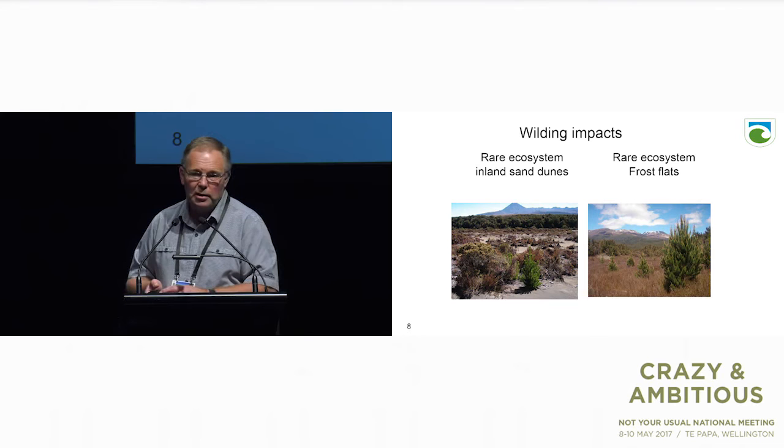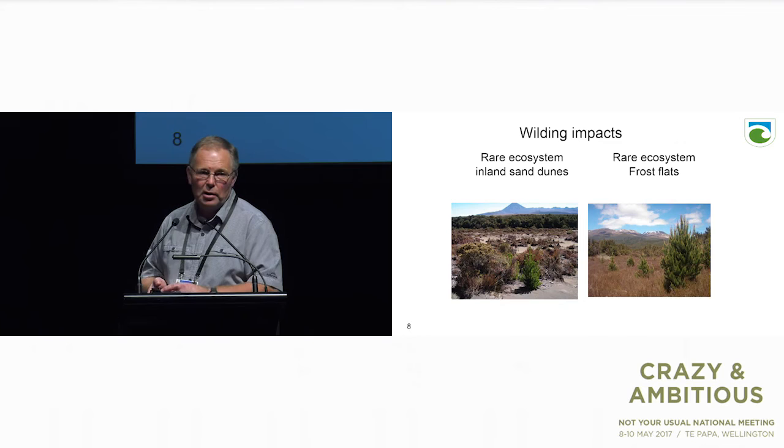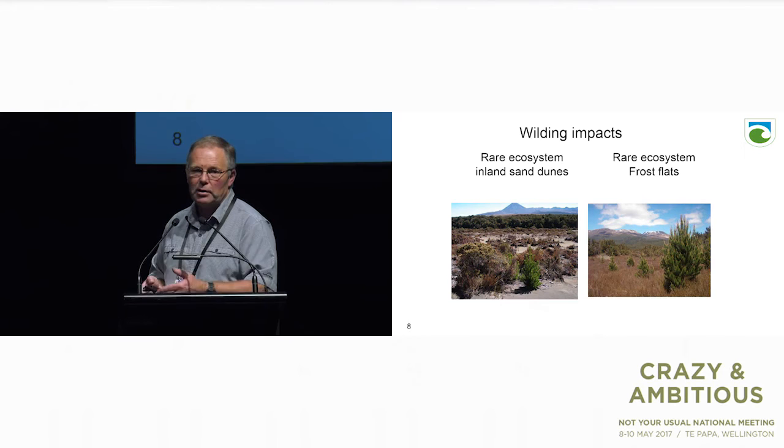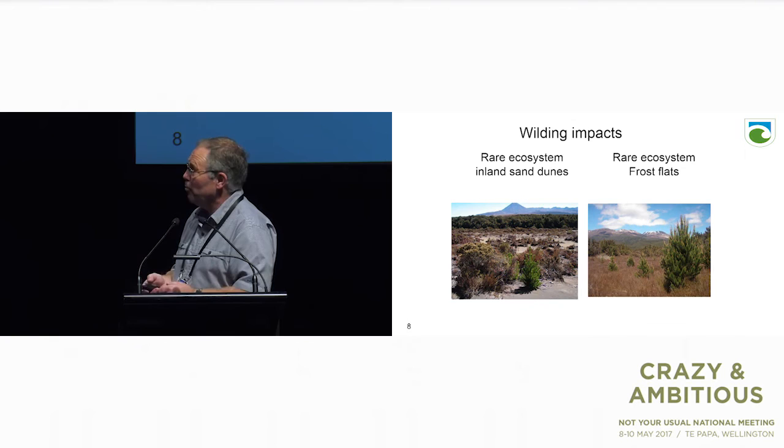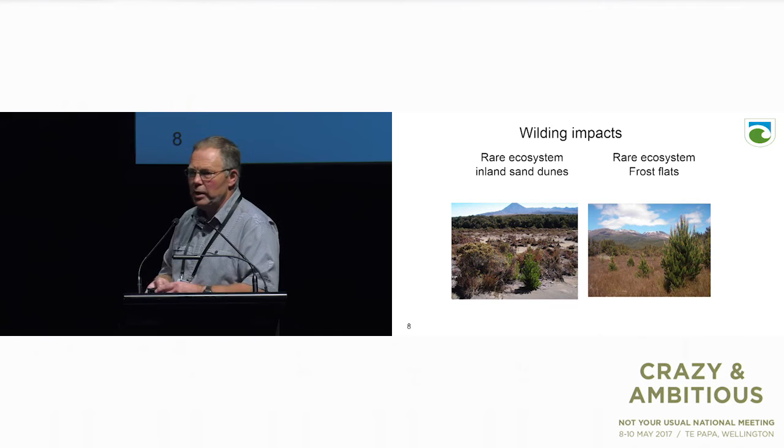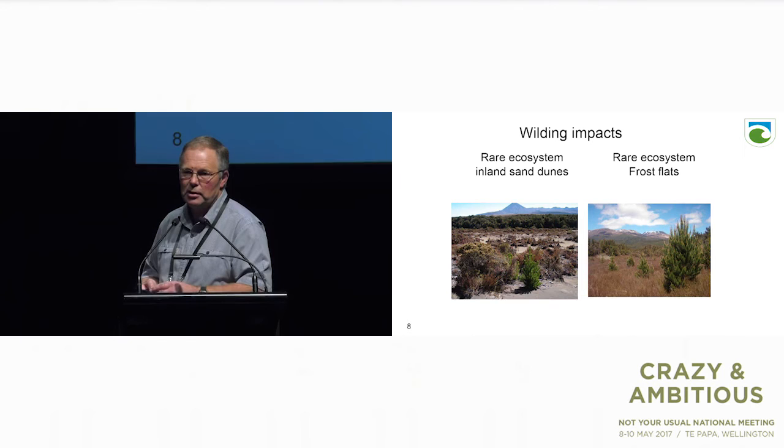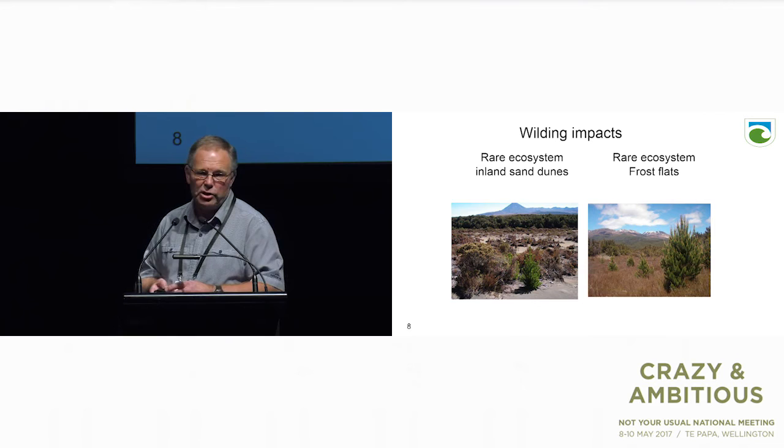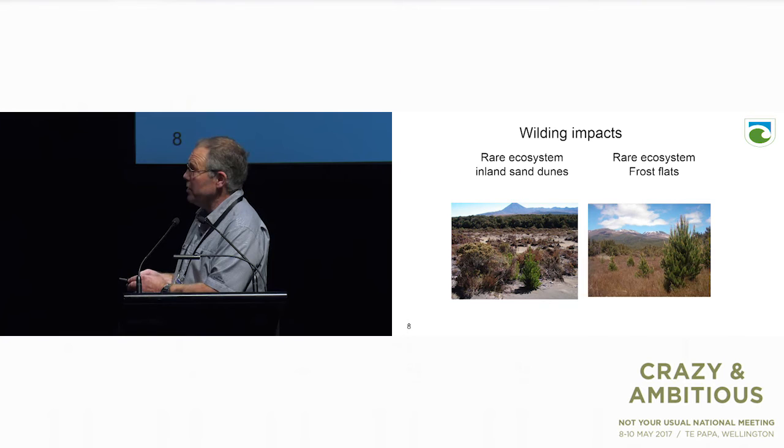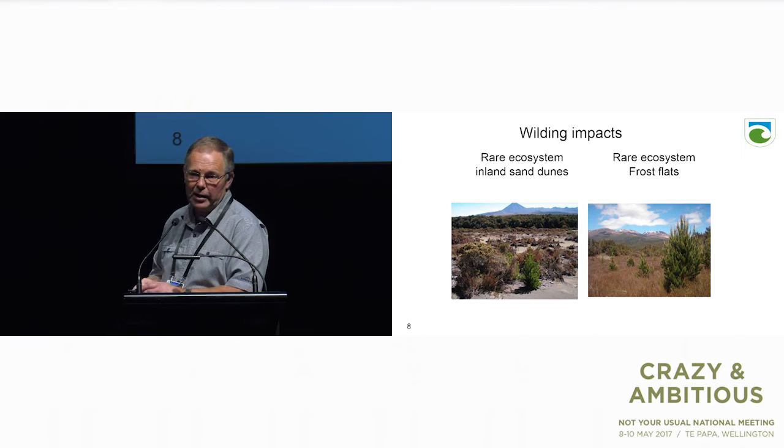Now moving on to threatened species. We have a number of naturally rare ecosystems—geothermal, ultramafic, glacial outwash, frost flats, inland sand dune systems and cliffs. Many of these are fairly harsh, disturbed sites, absolutely ideal for wilding conifer invasion. These are the inland sand dunes and frost flats in the central North Island—wilding conifers would completely take over these ecosystems.